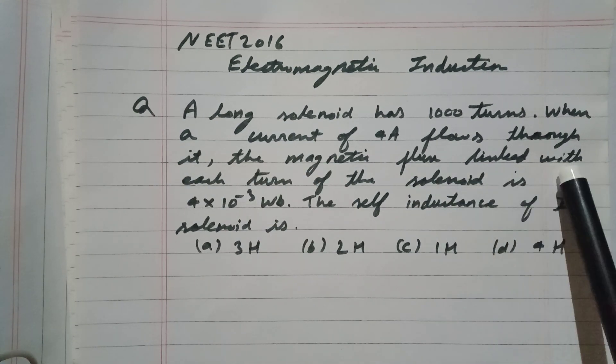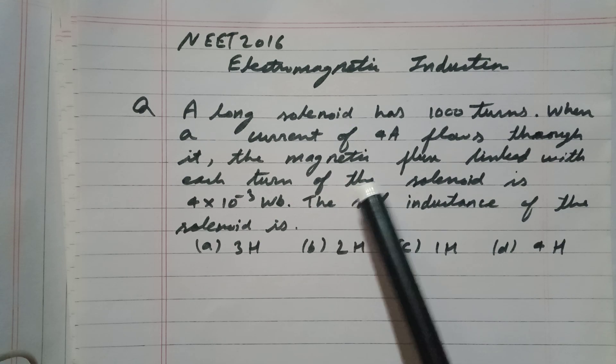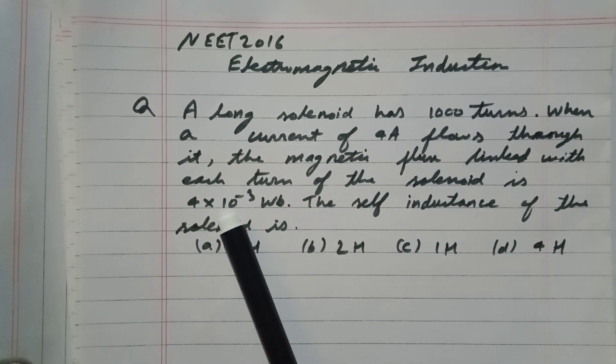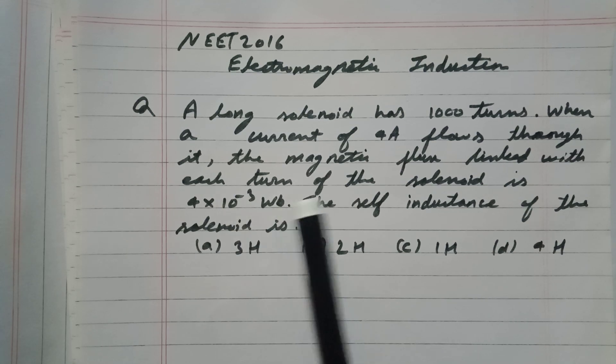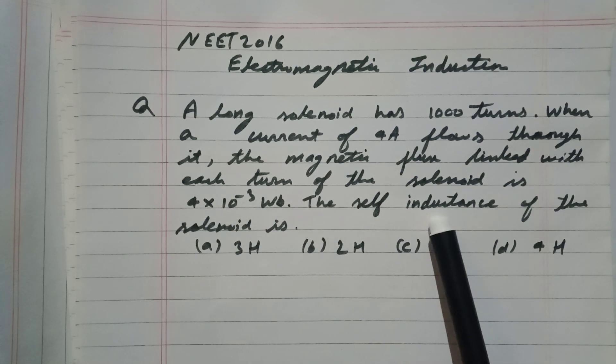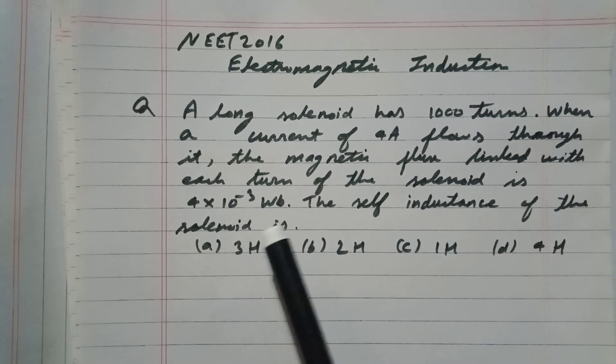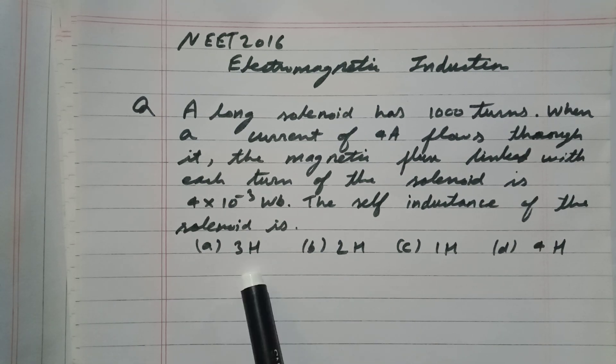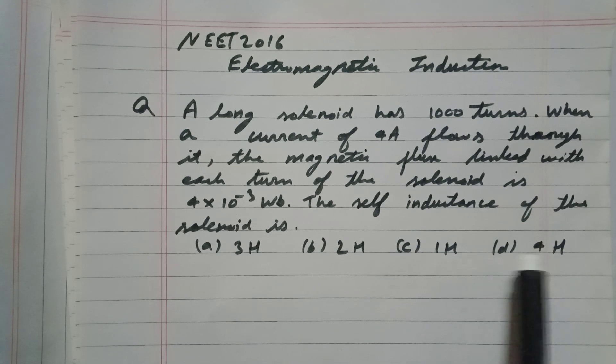...the magnetic flux linked with each turn of the solenoid is 4×10^-3 Weber. The self inductance of the solenoid is? The options are given as: (a) 3 Henry, (b) 2 Henry, (c) 1 Henry, and (d) 4 Henry.